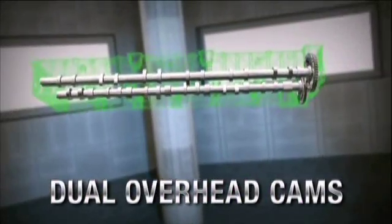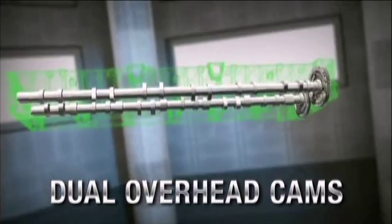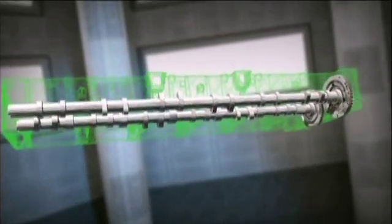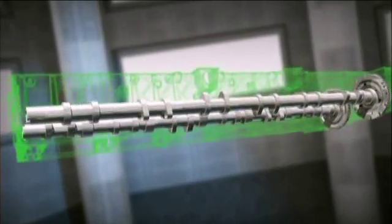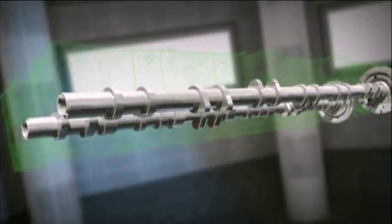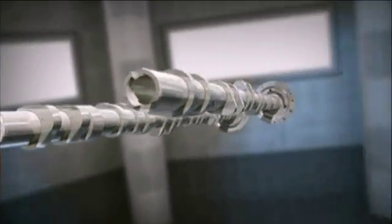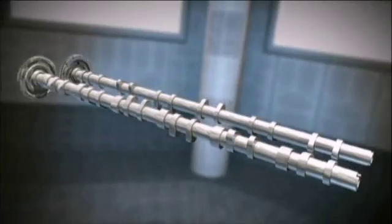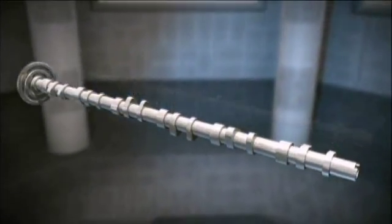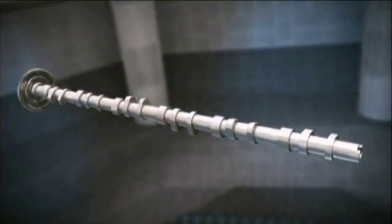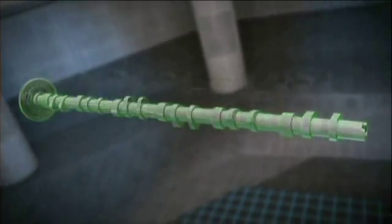Dual overhead cams provide more precise control of the air-fuel mix during combustion for improved emissions control. To reduce inertia and enhance throttle response, the stronger, lighter weight camshafts are hollowed out, while the integration of a separate lobe for the Jacobs engine brake increases operating efficiency and reduces weight.